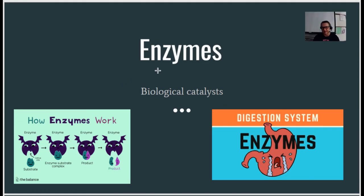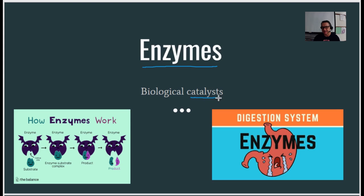If there's one topic in unit one that's super important and going to be on our test, it's going to be enzymes. Enzymes are special proteins that speed up chemical reactions in the body, also called catalysts. A catalyst is anything that speeds up a chemical reaction. This video is going to cover all the notes and everything you need to know about enzymes.